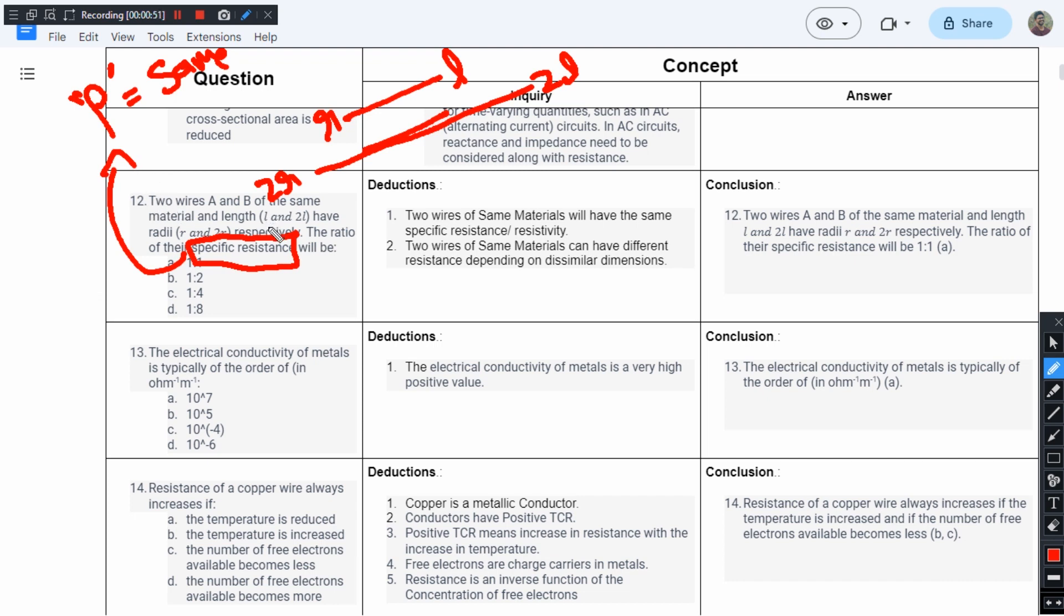In the beginning of the question itself, we have declared that resistivity is going to be same for both materials. So Rho1 to Rho2 is going to be Rho to Rho which equals 1 to 1. So option A is the right answer because we are talking about the same material.